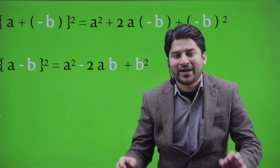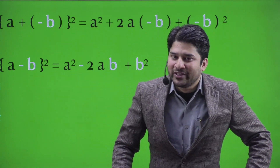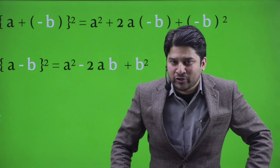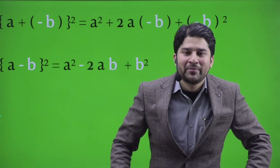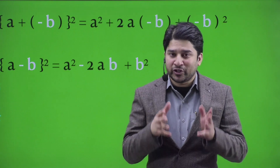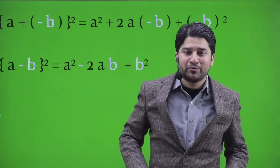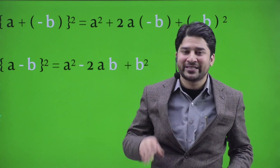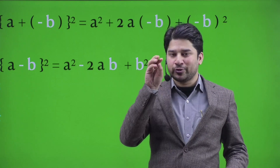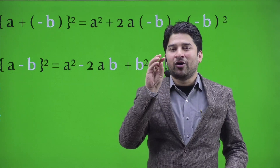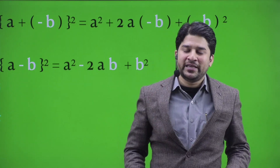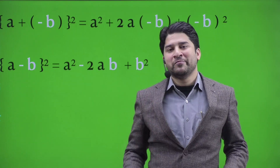So we had these two methods. The first one was totally a visualization of (a minus b) whole square. In the second method, we first visualized (a plus b) whole square and then used elementary algebra to plug minus b in place of plus b. Thank you.